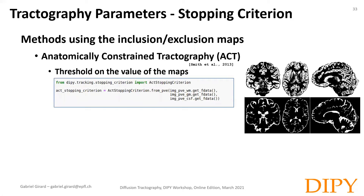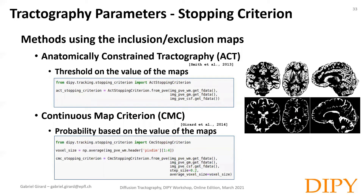There are two methods implemented in DIPY that use inclusion and exclusion maps. The anatomically constrained tractography (ACT) interpolates the partial volume estimate map and uses a threshold on the white matter value to stop or continue the tracking. The streamline is included if the fraction of gray matter is higher than the fraction of CSF. The continuous map criterion (CMC) uses a similar approach, but uses probability derived from the tissue fraction to determine whether or not the streamline should stop and if it should be included or excluded from the final tractogram.